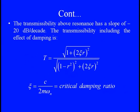Transmissibility above resonance has a clear slope of 20 dB per decade in sound level. When including the damping effect, the transmissibility formula becomes T = √[(1 + (2ζr)²) / ((1 - r²)² + (2ζr)²)], where ζ is the damping ratio (available damping divided by critical damping) and r is the frequency ratio.